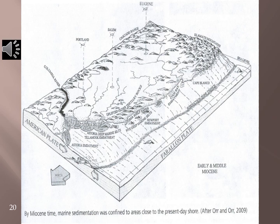By Miocene time, marine sedimentation was confined to areas close to the present-day shoreline. Note the deposition of the Nye deep marine silts and the Astoria shelf sands within the Newport embayment, with the Umpqua deltaic sediments underlying both. The Columbia River basalts were flowing down the then-existing Columbia River and would eventually invade the Newport embayment, forming the headland features that bracket today's Moolack and Beverly Beach.